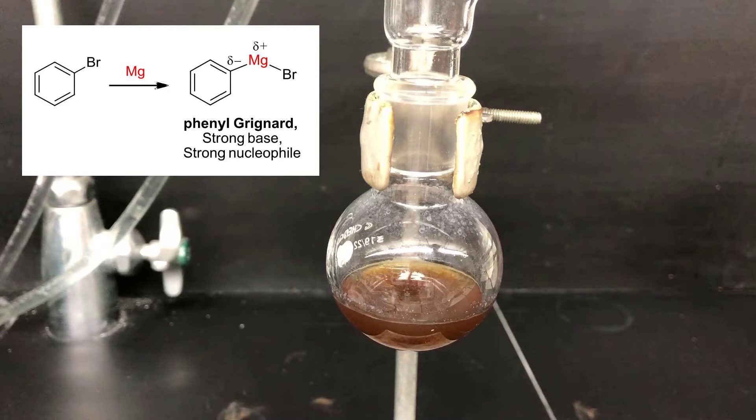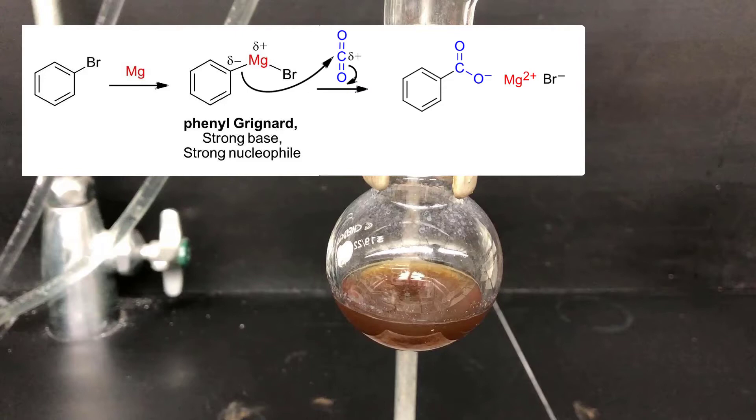Now, I have a flask with phenylmagnesium bromide dissolved in ether. Next, I'll add this solution to solid CO2, dry ice, and the Grignard reagent will attack the carbon of the CO2 and form a new carbon-carbon bond to make a magnesium carboxylate salt of benzoic acid.